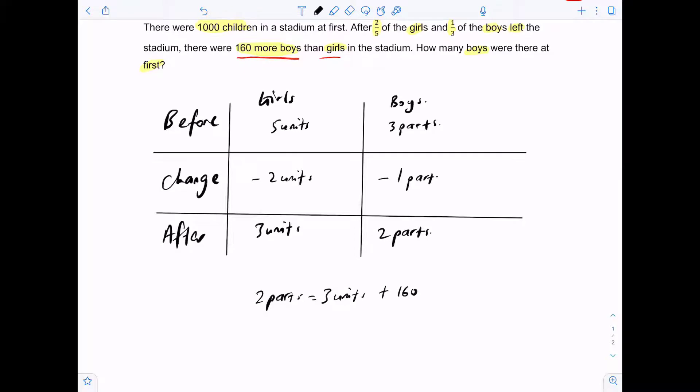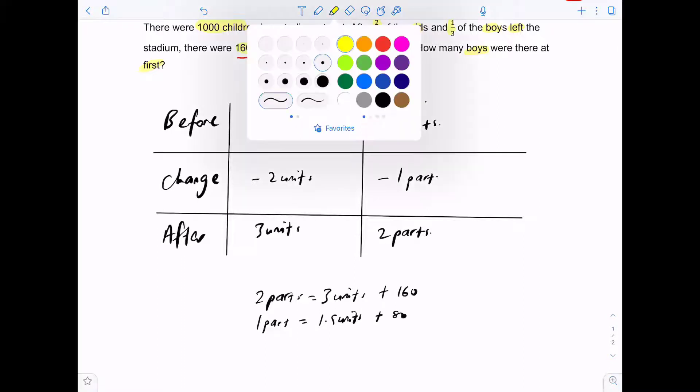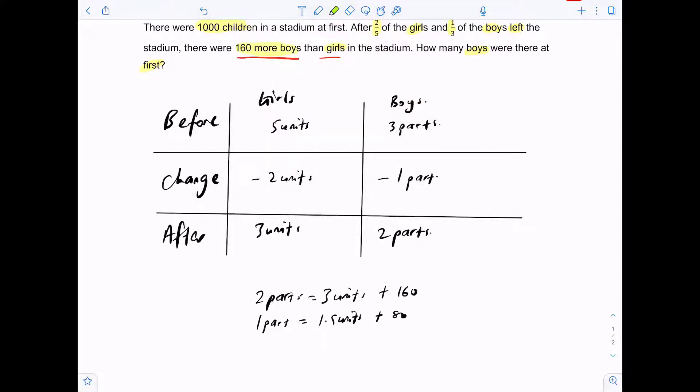We can find what is one part of boys by dividing by two throughout. So one point five units plus 80. I know now that one part of boys is the same as one and a half units of girls plus another 80 people.